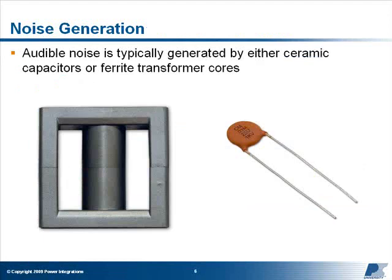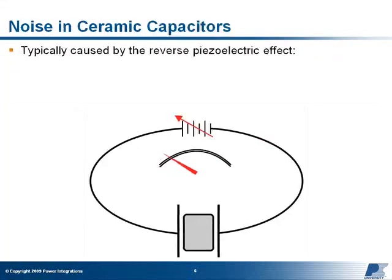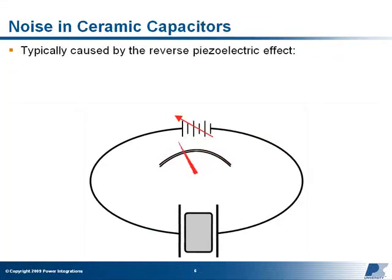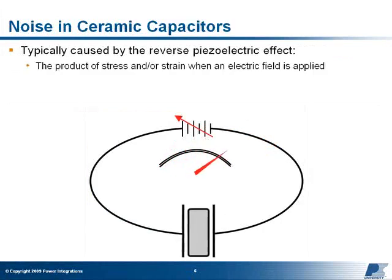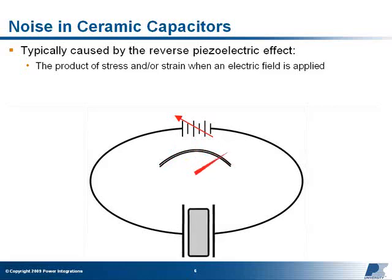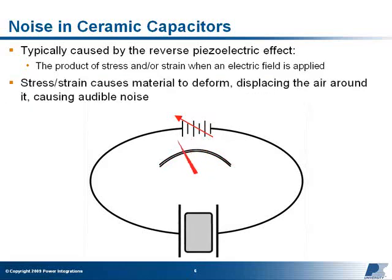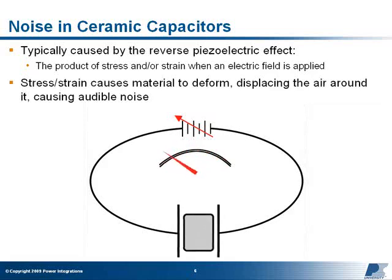Audible noise is typically generated by either ceramic capacitors or ferrite transformer cores. Noise in ceramic capacitors is typically caused by the reverse piezoelectric effect. When voltage is applied across a dielectric structure, it can induce a mechanical stress or strain and cause the material to deform. As this material deforms, it displaces the air around it and causes audible noise.